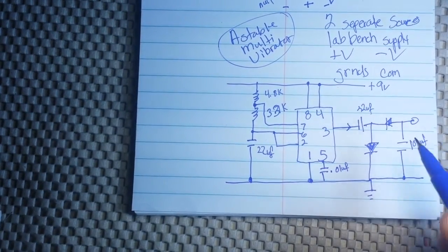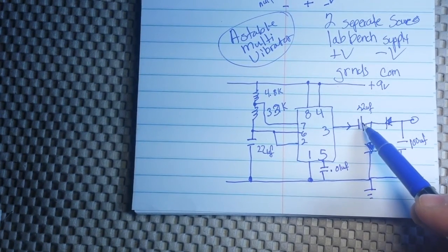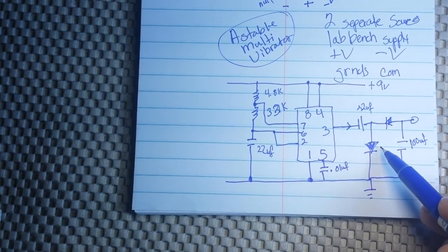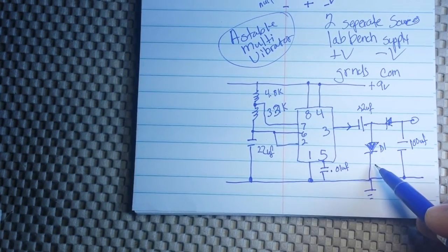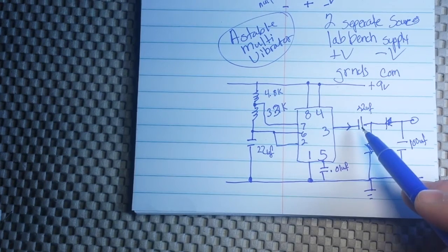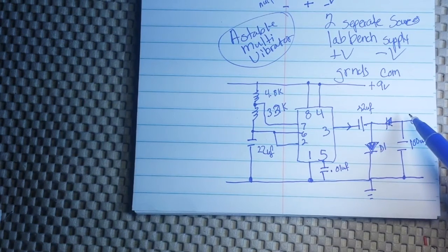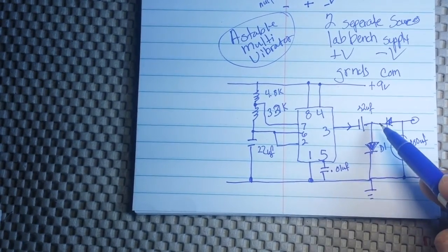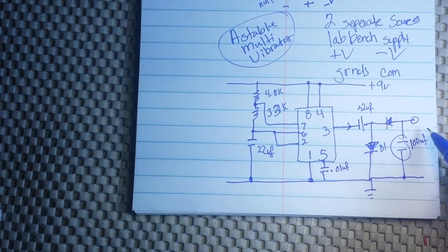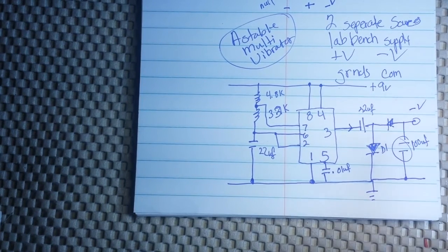Now, with this circuit, what happens is when the output is high, this 22 microfarad capacitor is going to charge through this, which we'll call D1, is going to charge through D1. And when the output is low, it is going to discharge through D2 and charge this capacitor. So, as it flips back and forth, we have our current going like this. And it gives us a negative output here.